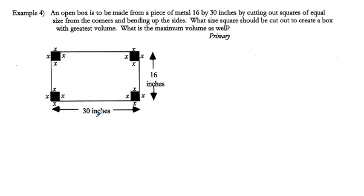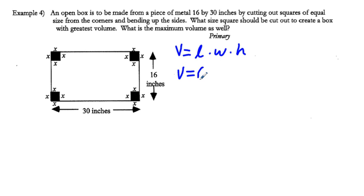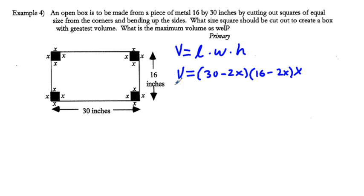First, we look for an equation for the volume of the box. The volume of a rectangular prism is length times width times height. We have a sheet 30 inches in length, so when we cut out corner squares of side x, our length becomes 30 minus 2x. The width becomes 16 minus 2x, and when the flaps are bent up, the height is x. So V = (30 - 2x)(16 - 2x)(x).